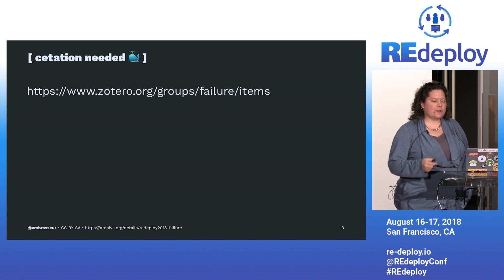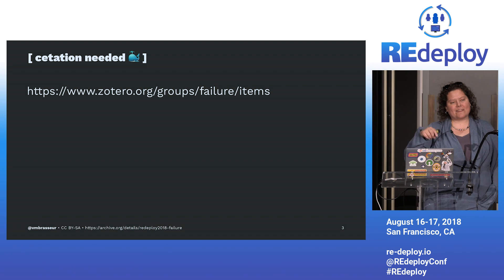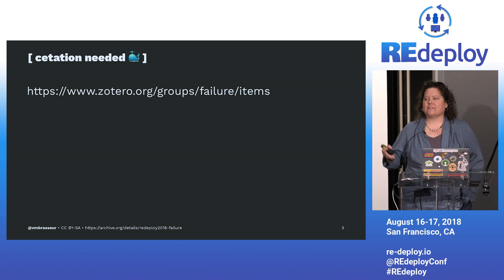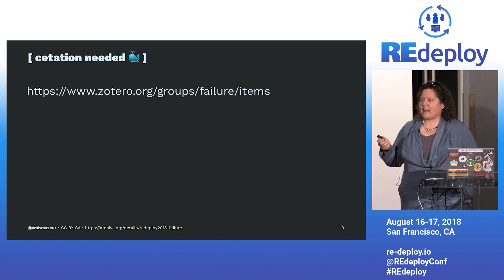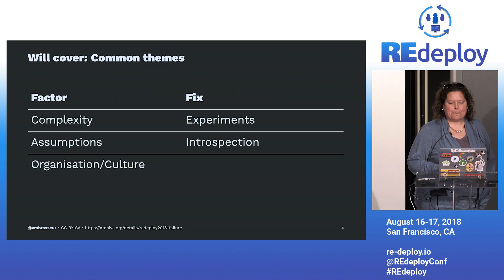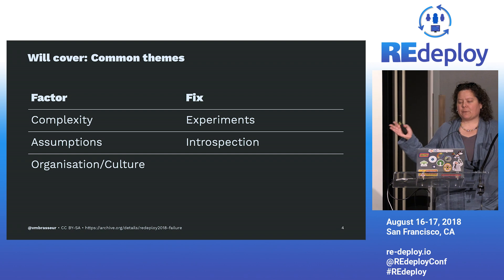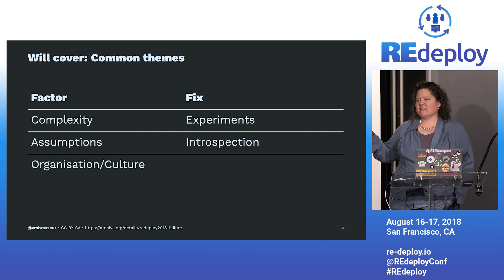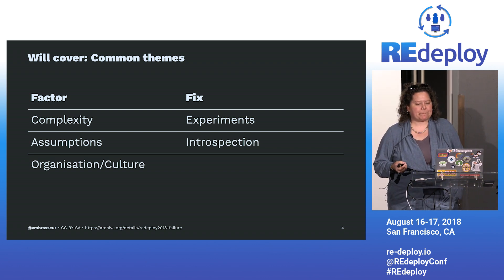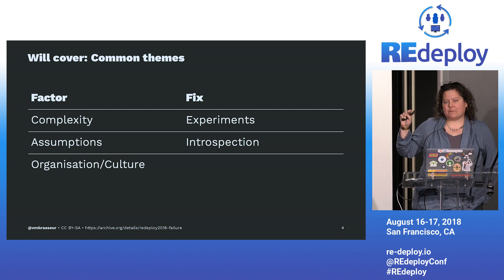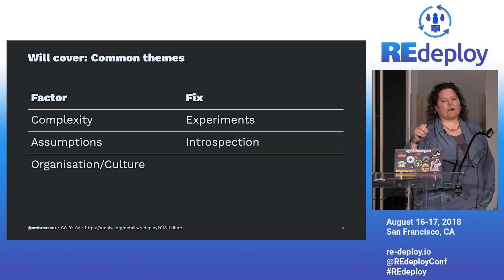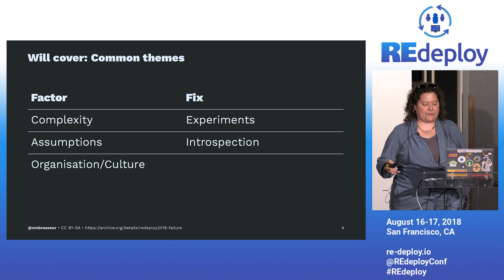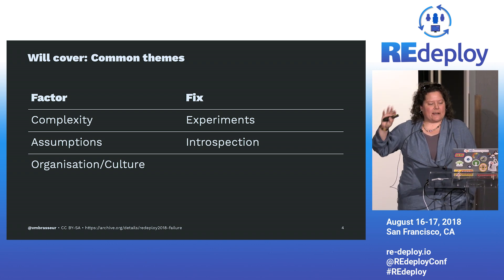If you want to know what that research is, you've got a citation. I will show you this URL at the end. What this talk does is it synthesizes and condenses down all of those thousands of pages of research into the commonalities — the things you see over and over again. There are several common themes, summarized in the categories of factors and fixes. Factors are those things that contribute to failure, and fixes are the things that make it better. I will cover each of these common themes, but I've only got 40 minutes, so I can only touch upon each theme.